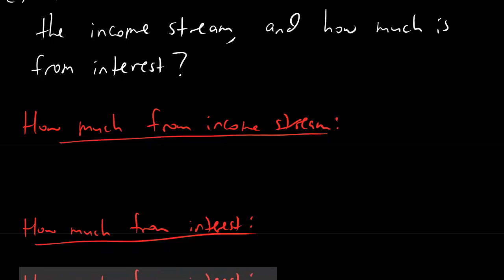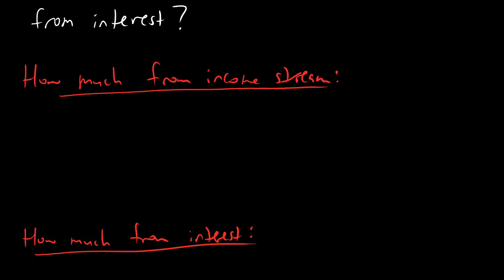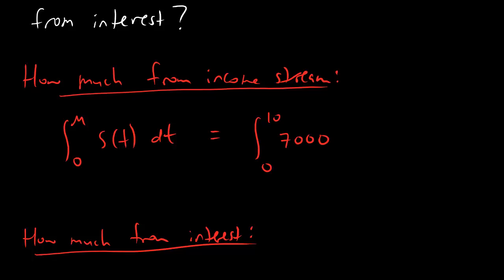There's a simple formula that tells you how much money you get from the income stream a lot faster. It's just this: the integral from 0 to m of s(t) dt. This formula looks exactly like the formula for present value — it just doesn't have that e to the minus stuff. In this example, we integrate from 0 to 10, s(t) is the income stream which is just 7,000. It's just 7,000 dt. It turns out that integrating this gives you 70,000.